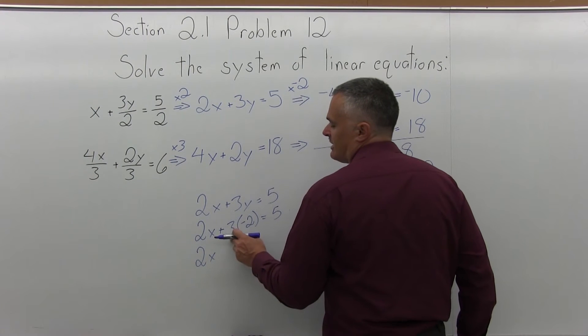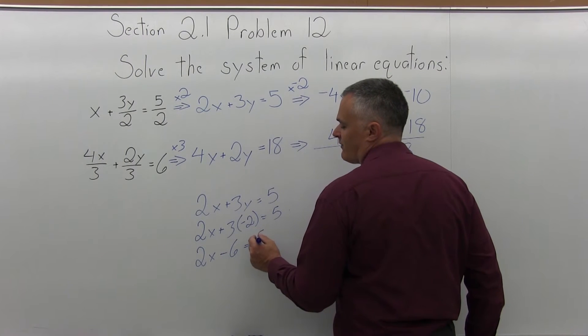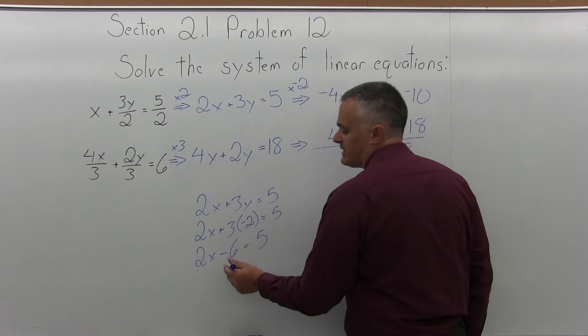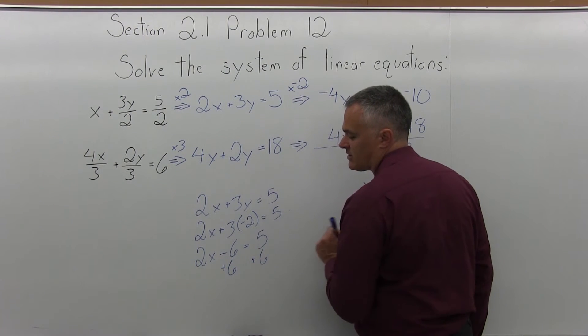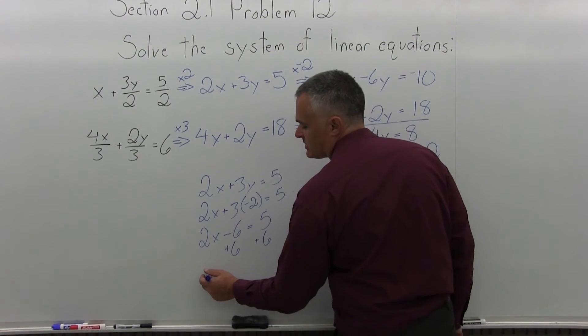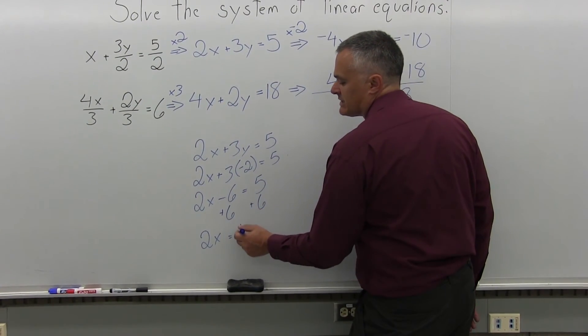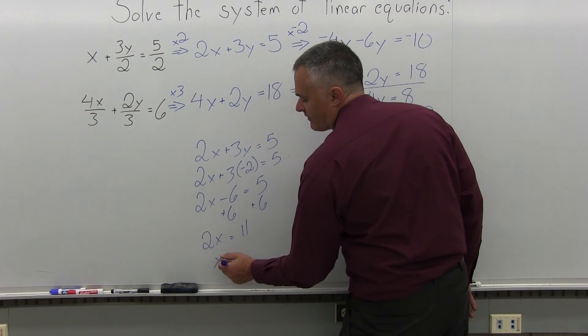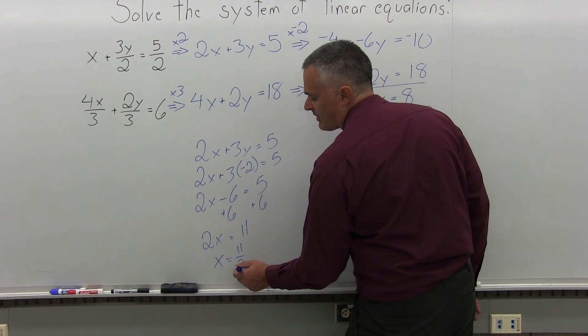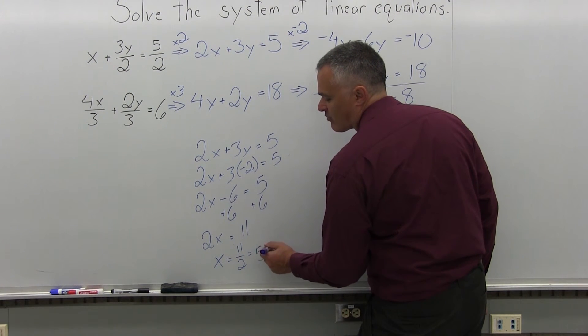So 2x, that's going to be minus 6. 3 times negative 2 is minus 6 equals 5. So now I get the 2x by itself. I want to do plus 6 on the left side of the equals and plus 6 on the right side of the equals. So I'm going to have 2x equals 5 and 6 more is 11. And now divide out the value in front of the x which is 2. So 11 divided by 2 is 5 and a half or 5.5.